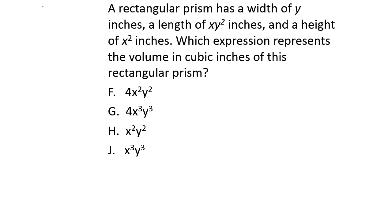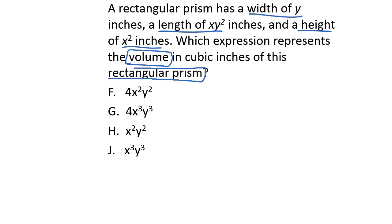The problem tells us the width is y, the length is xy squared, and the height is x squared. A key word in this problem is 'volume' of a rectangular prism. The formula for the volume of a rectangular prism is length times width times height.